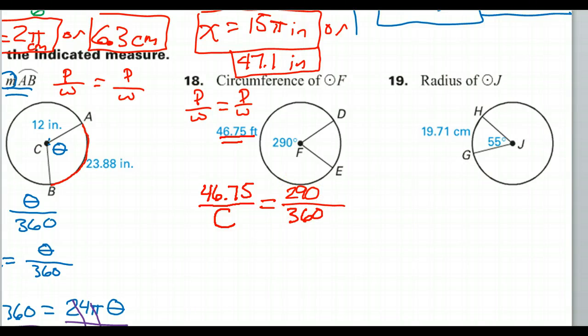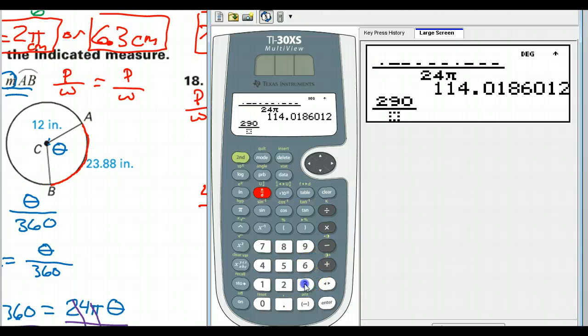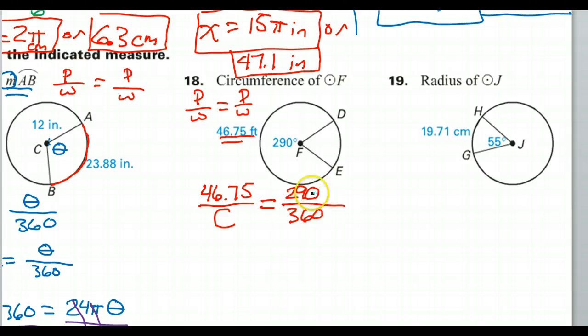Let's reduce this like I'm always saying. So 290 over 360, that's 29 over 36. Okay, that wasn't much of a help, but it's something. We have 46.75 over the circumference equals 29 over 36.